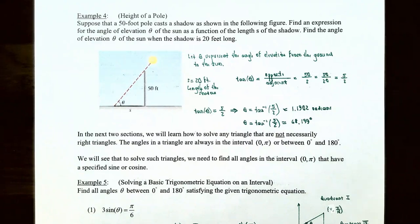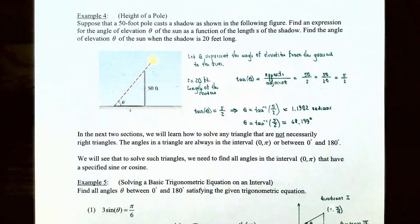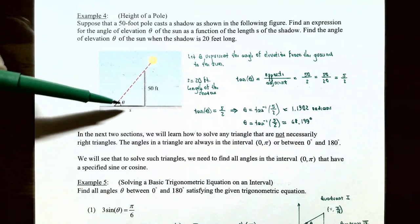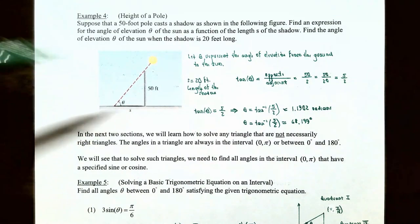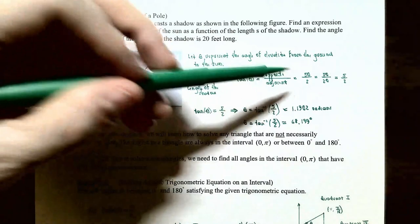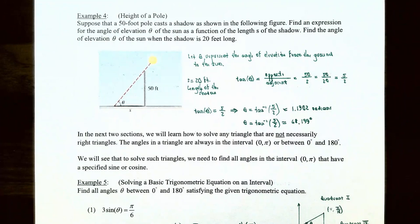Example 4: a 50-foot pole casts a shadow. Find an expression for the angle of elevation theta of the sun as a function of the shadow length s, then find the angle when the shadow is 20 feet long. The opposite side is 50 feet and the adjacent side is s feet. Since we have opposite and adjacent, we use tangent: tan(theta) = 50/s. That's the expression for the angle of elevation as a function of s.